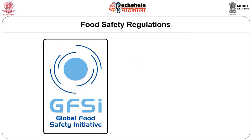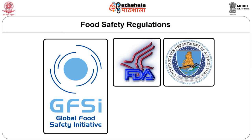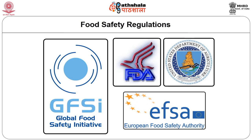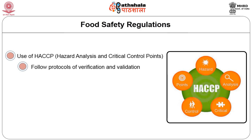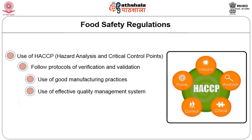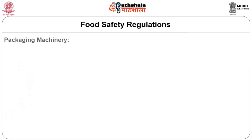Certification programs such as the Global Food Safety Initiative can be used. Other regulations may be specific to countries such as the norms of US Food and Drug Administration, US Department of Agriculture, European Food Safety Authority, etc. The regulations that have to be adhered to in food packaging are: use of HACCP (hazard analysis and critical control points), following protocols of verification and validation, use of good manufacturing practices, use of effective quality management systems, use of track and trace systems, and following requirements for content of labels.